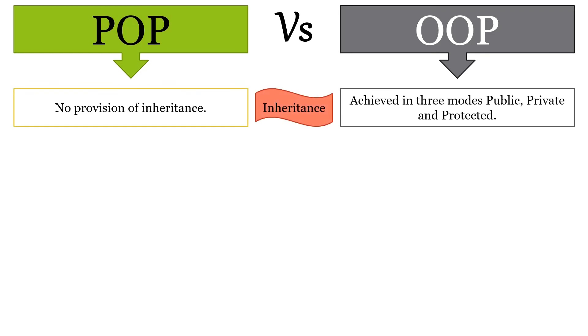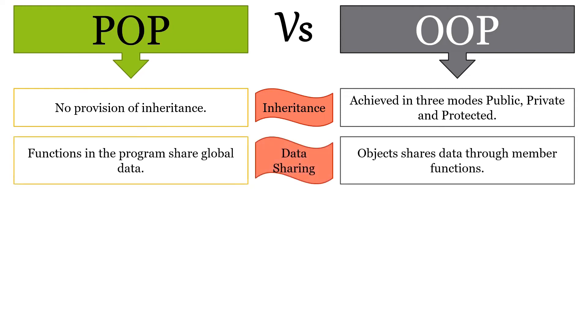In POP, there is no concept of inheritance whereas in OOP, inheritance is achieved in three modes: public, private, and protected. In POP, functions in the program share global data whereas in OOP, objects share data through member functions.